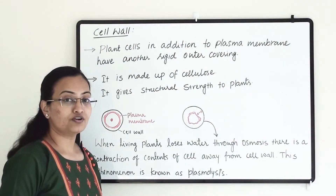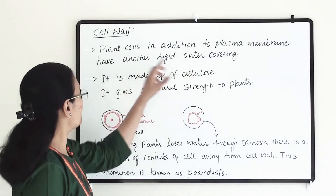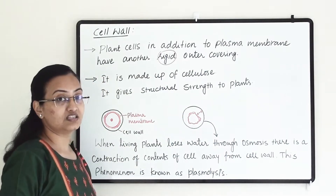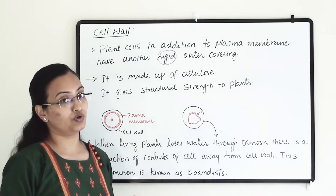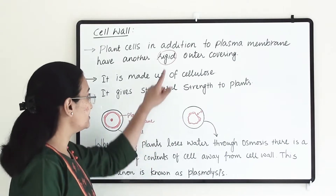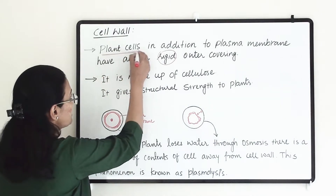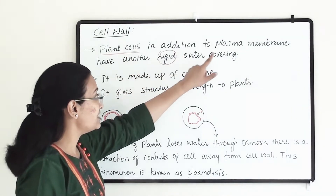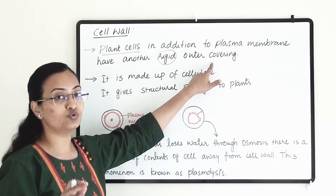Another important feature of the cell is the cell wall. Plant cells, in addition to the plasma membrane, have another rigid outer covering. The plasma membrane is flexible and is made up of lipid and protein molecules. The plasma membrane is within, and the outer rigid covering is known as the cell wall. This cell wall is only present in plant cells — it is not present in animal cells.